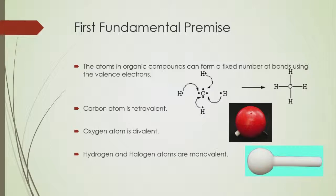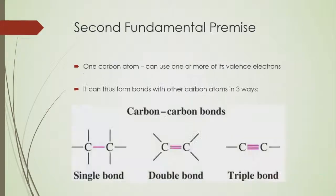Moving ahead, we have oxygen atom, which is divalent. As you can see from the picture, the red ball represents the oxygen atom, and the white and black tubes represent the two bonds. Finally, hydrogen and halogen atoms are monovalent. The second fundamental premise talks about how one carbon atom can use